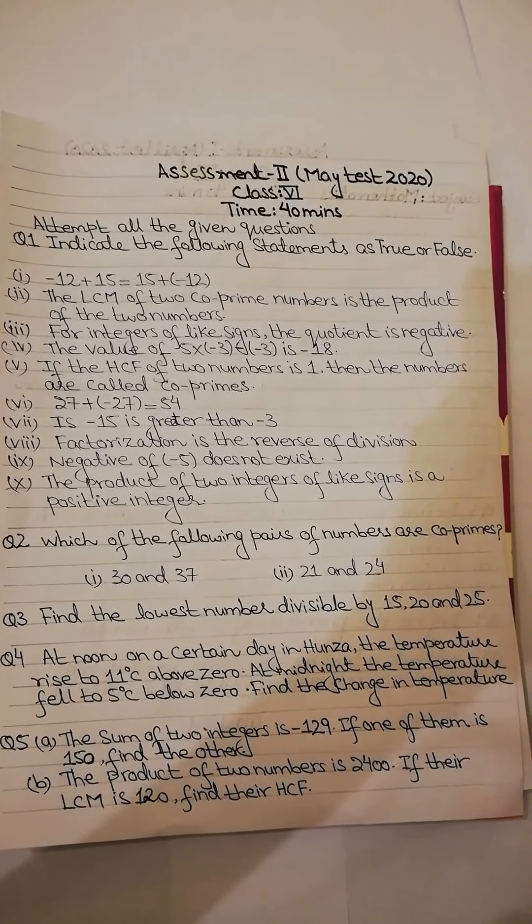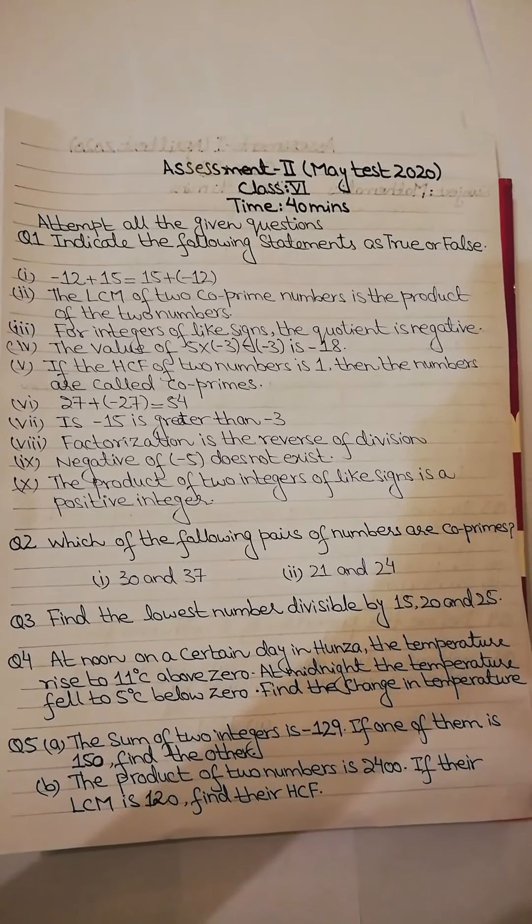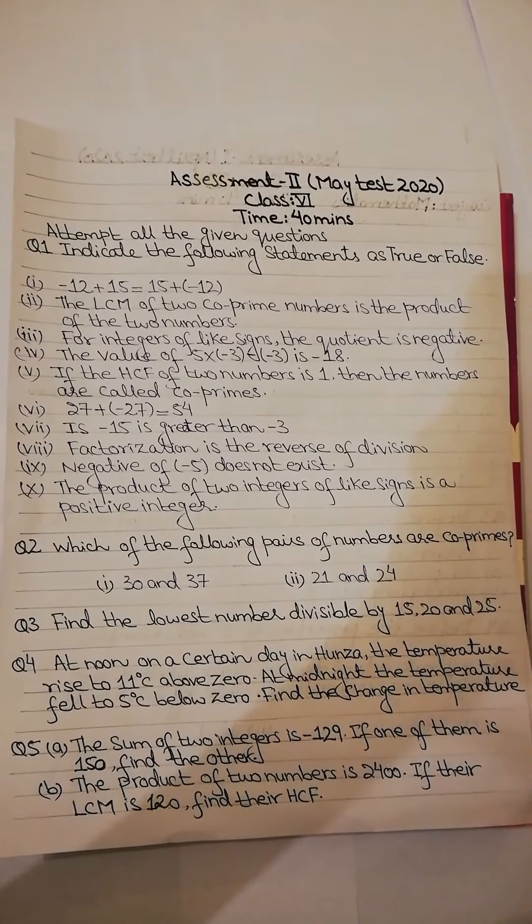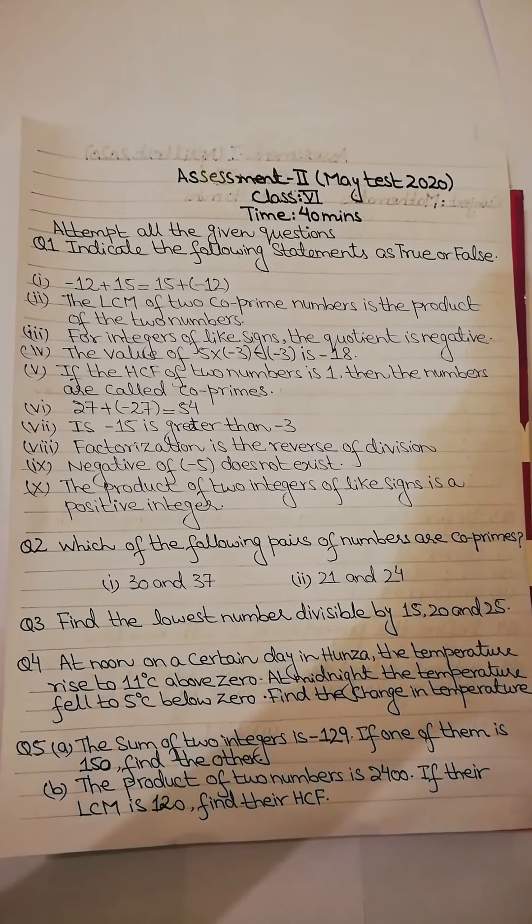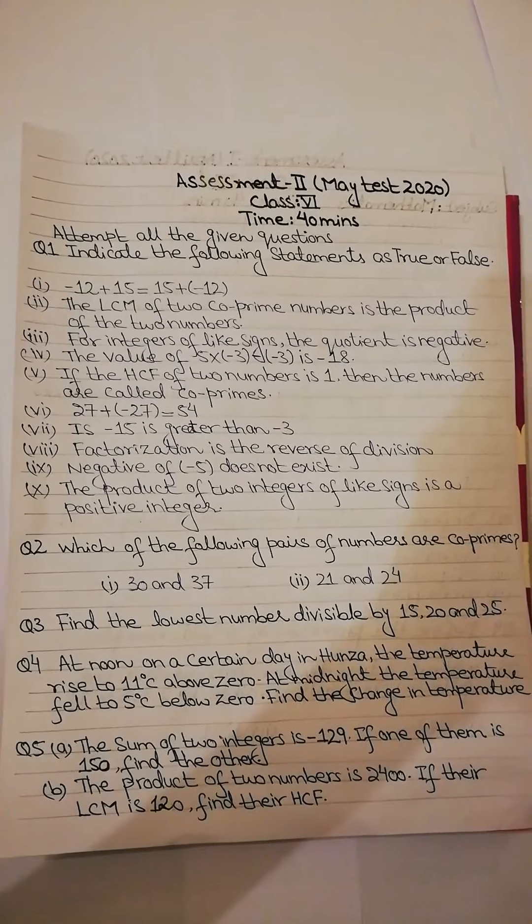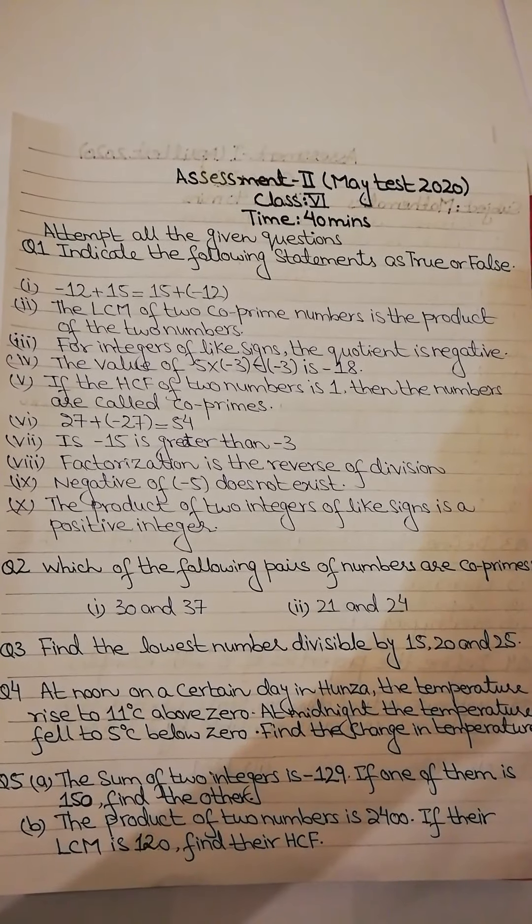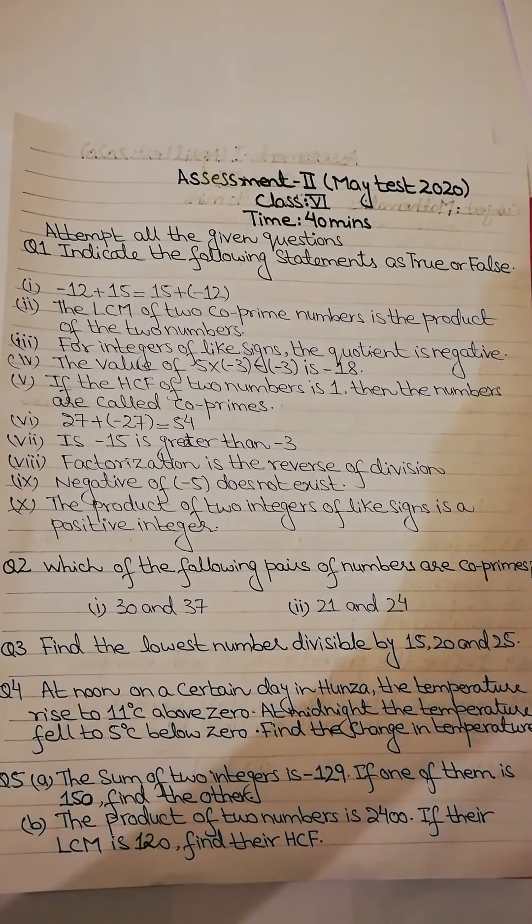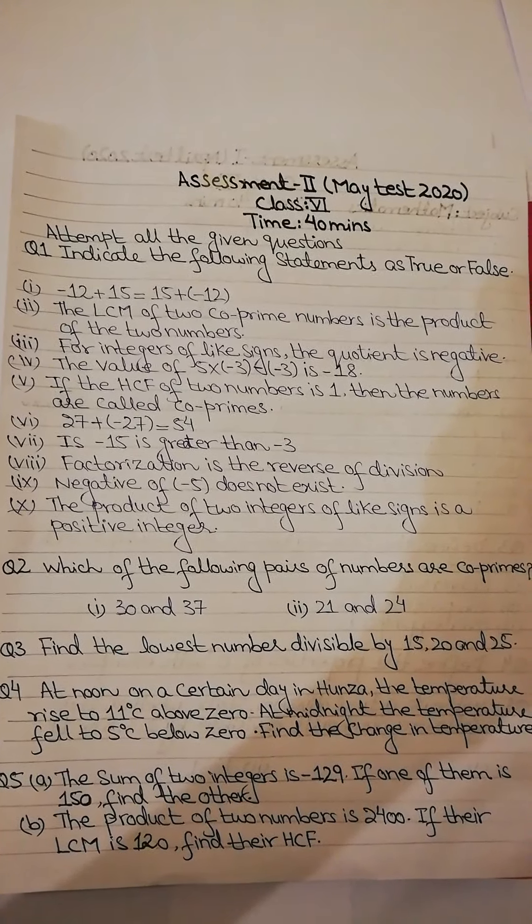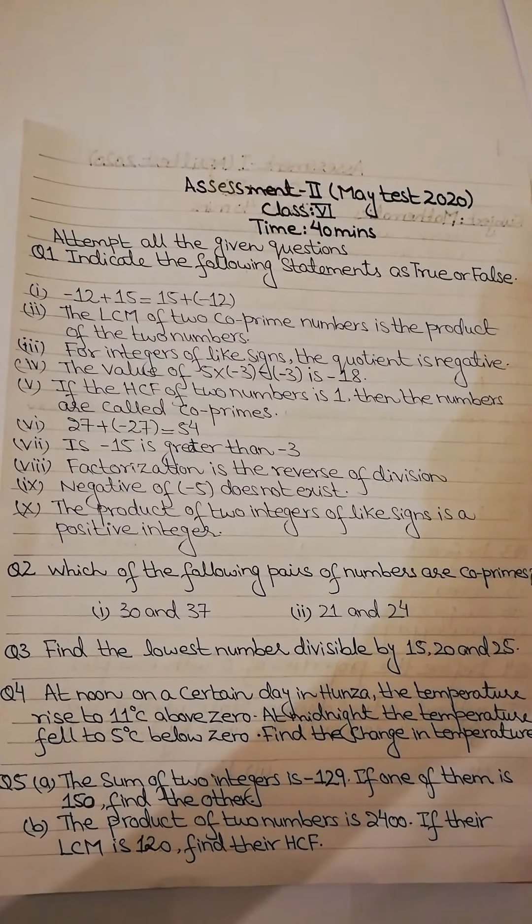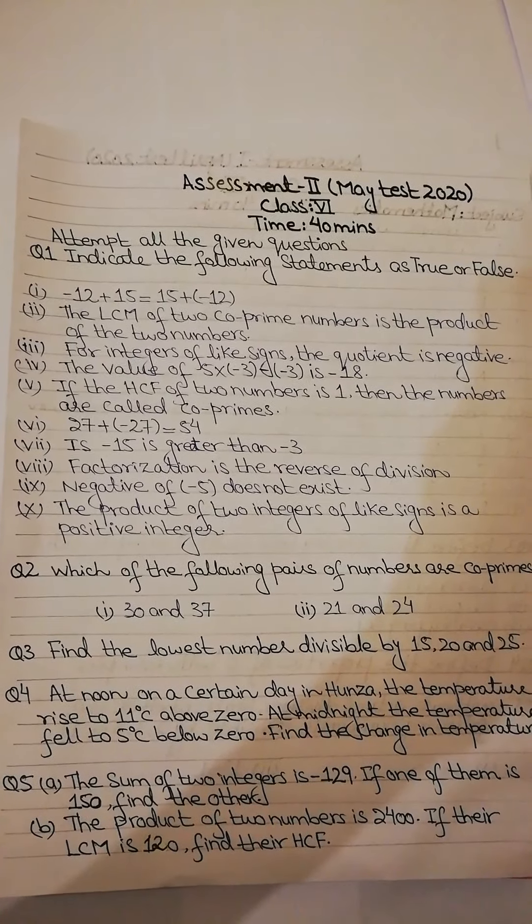Okay, question number 5 is a two-part question. First is part A, the sum of two integers is minus 129. If one of them is 150, find the other. And you have to find out the other integer. The part B is the product of two numbers is 2400. If their LCM is 120, find their HCF. Now we have two numbers product given which is 2400. If their LCM is 120, find their HCF.